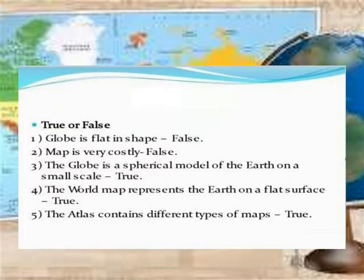The globe is a spherical model of the Earth. The world map represents the Earth on a flat surface. The atlas contains different types of maps.